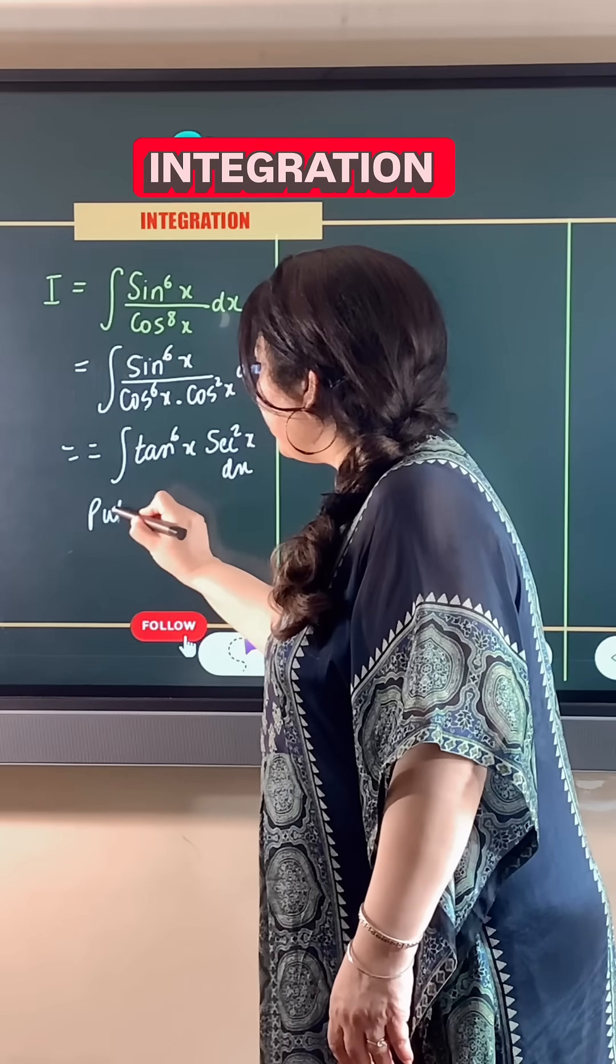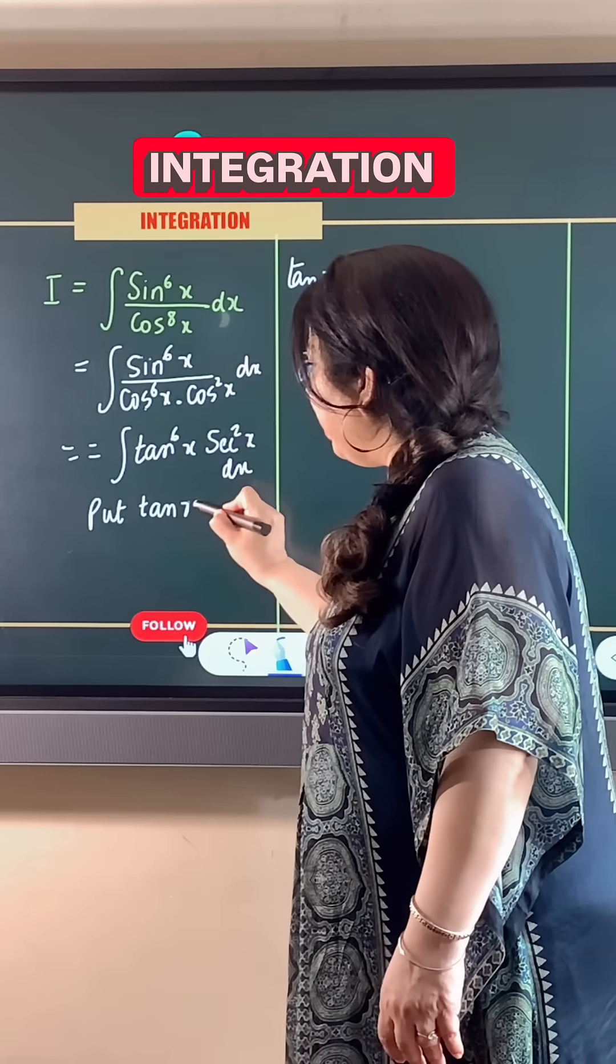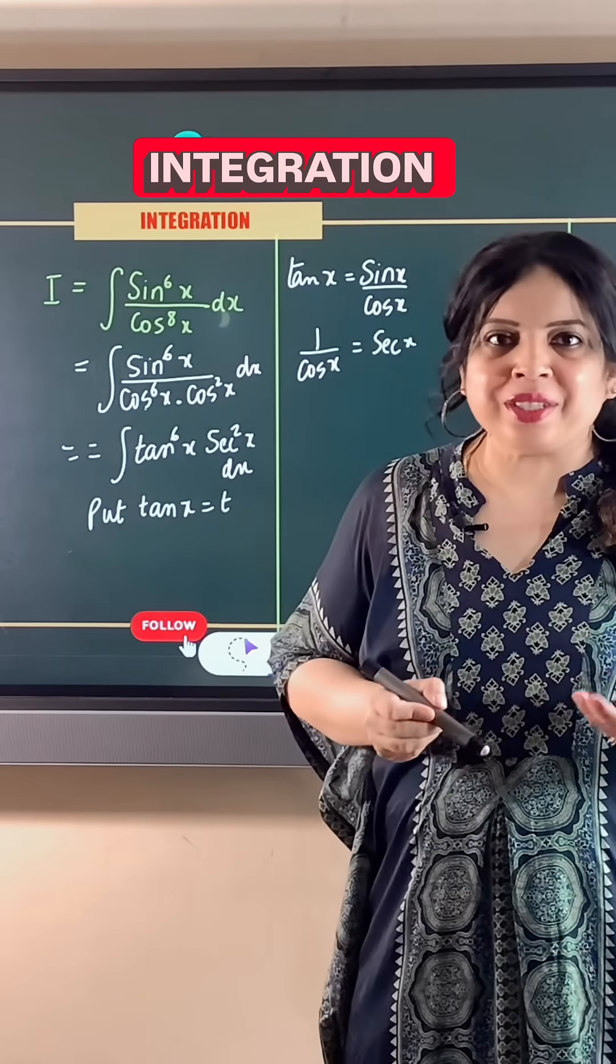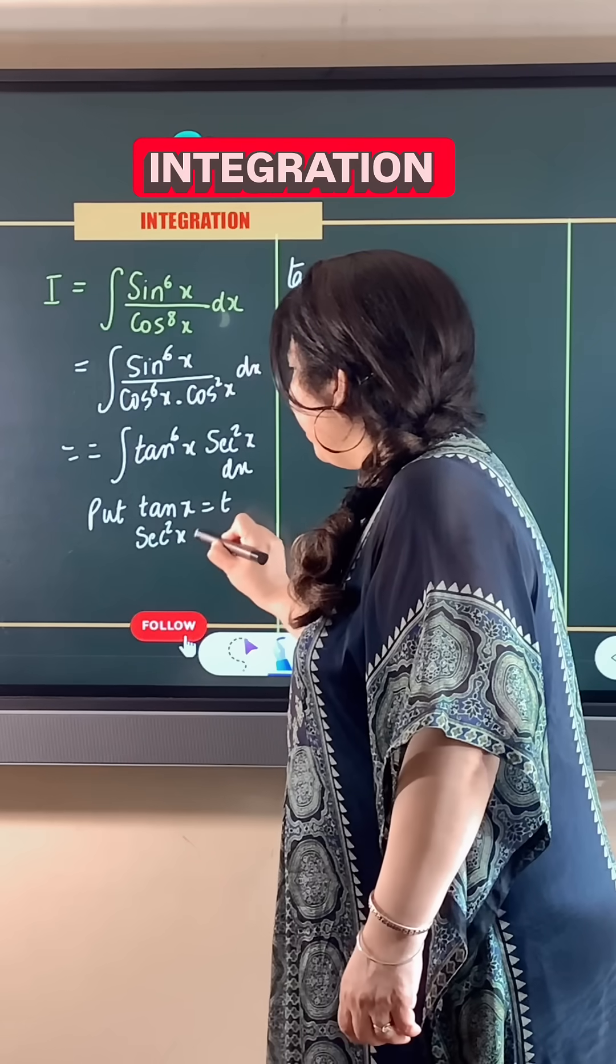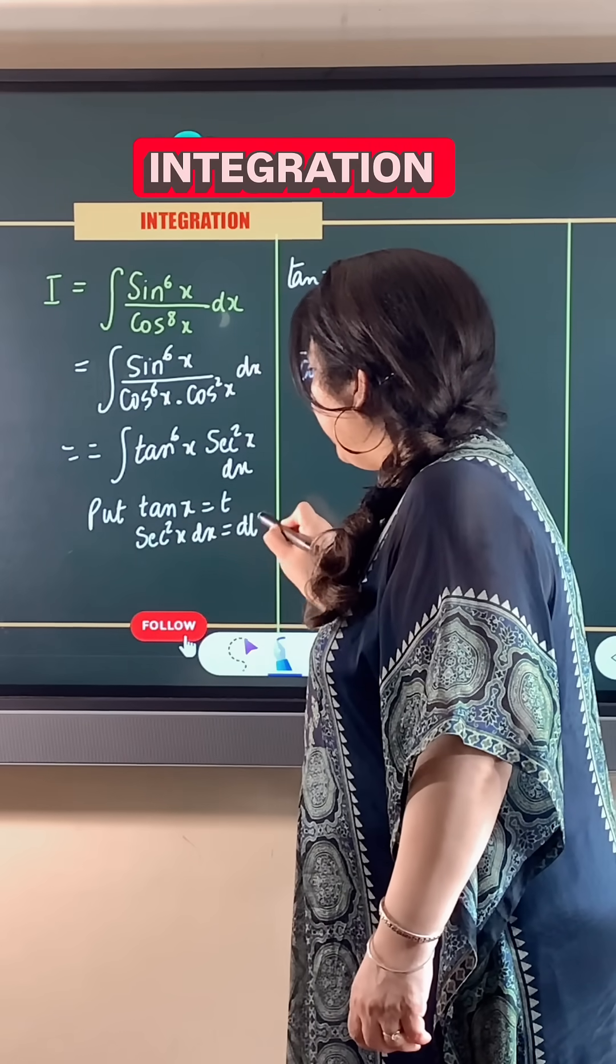So, put tan x is equal to t. On differentiating both sides with respect to x gives us secant square x dx is equal to dt.